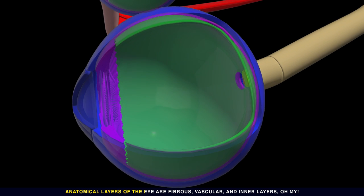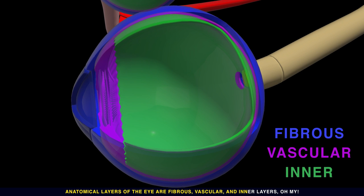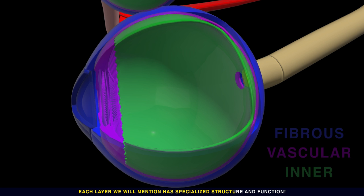Anatomical layers of the eye are fibrous, vascular, and inner layers, oh my! Each layer has specialized structure and function.